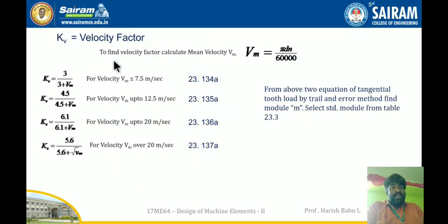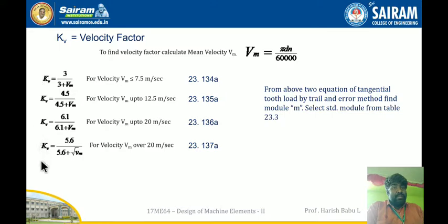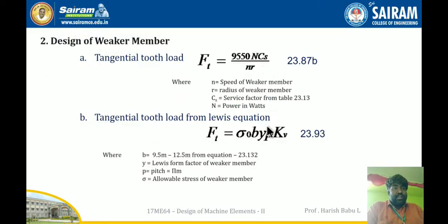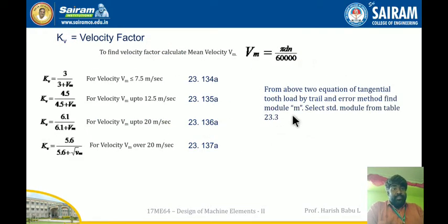To find the velocity factor kv, first calculate the mean velocity Vm = π × d × n / 60,000, where d and n are taken based on the weaker member (d1, n1 or d2, n2). Depending on whether Vm is less than 7.5, up to 12.5, up to 20, or over 20 m/s, the kv equation varies — using equations 23.134a, 23.135a, 23.136a, or 23.137a respectively. Substituting Vm gives kv. Then, substituting kv back and assuming module m from table 23.3 by trial and error — starting from 3, 4, 5, 6, 8 — continue until m satisfies the equation as a standard value.